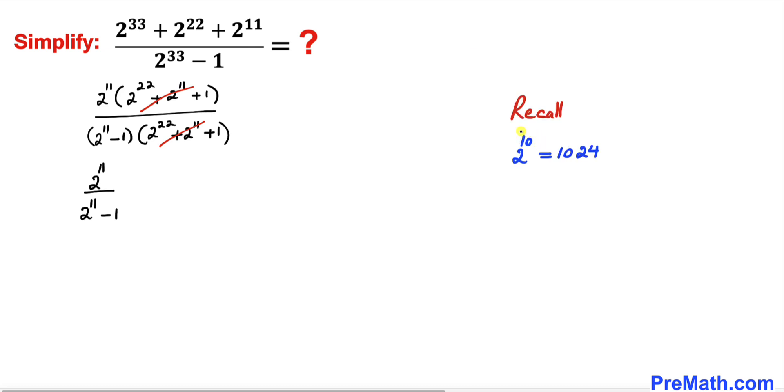And now let's recall 2 power 10 is always equal to 1024. If you did not know that, please keep it in your mind from this point on. And now since we are looking for 2 power 11...